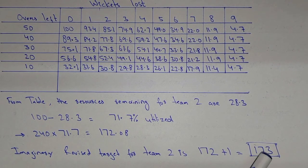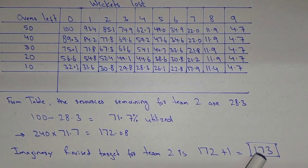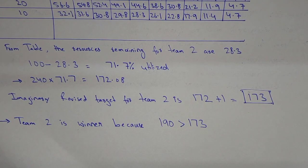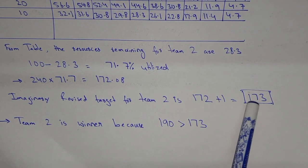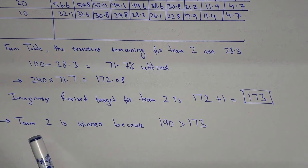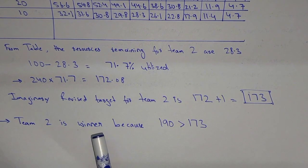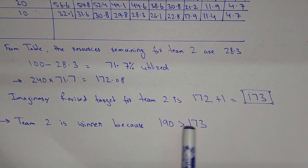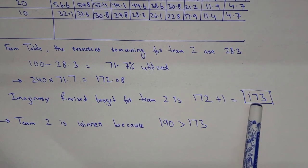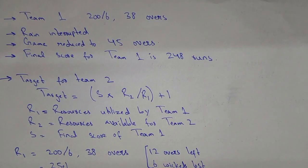So the imaginary revised target for Team 2 is 173, even though the original target was 240. But Team 2 had already made 190 runs in 40 overs for the loss of 4 wickets, which is more than the revised target of 173. Therefore, Team 2 is the winner. That was Scenario 1.